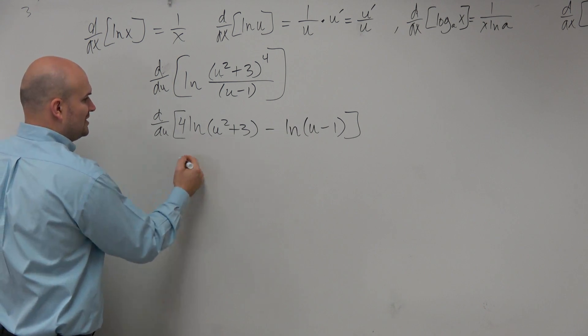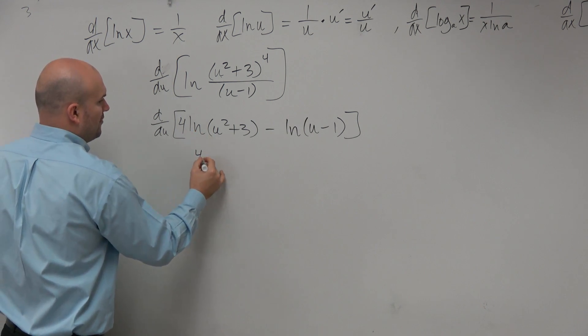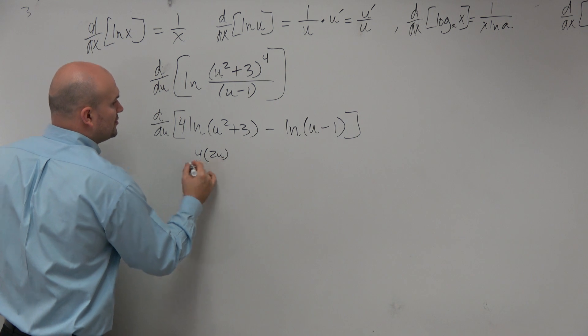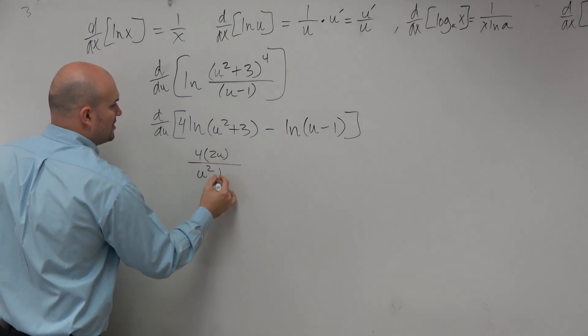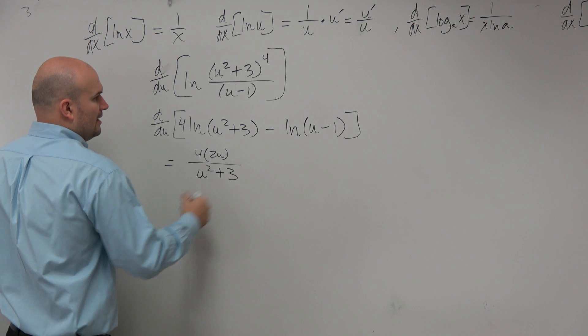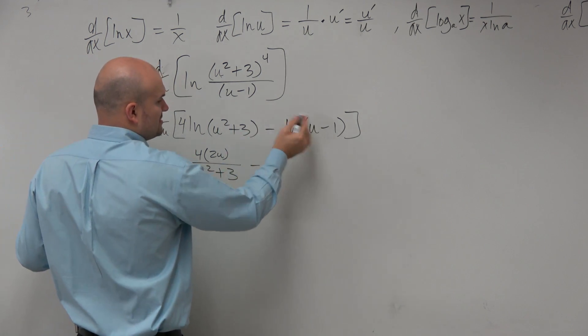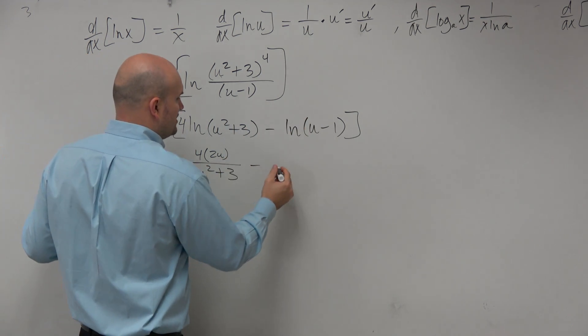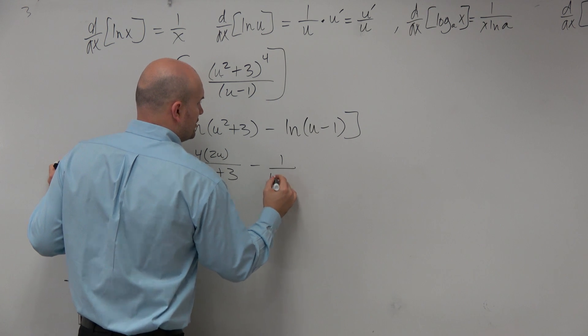So therefore, all I simply need to do now, I have a 4 here. So that's going to be 4 times 2u. That's my u prime over u. u squared plus 3. And then over here, that's going to be minus, that's u prime is 1. So that's going to be 1 over u minus 1.